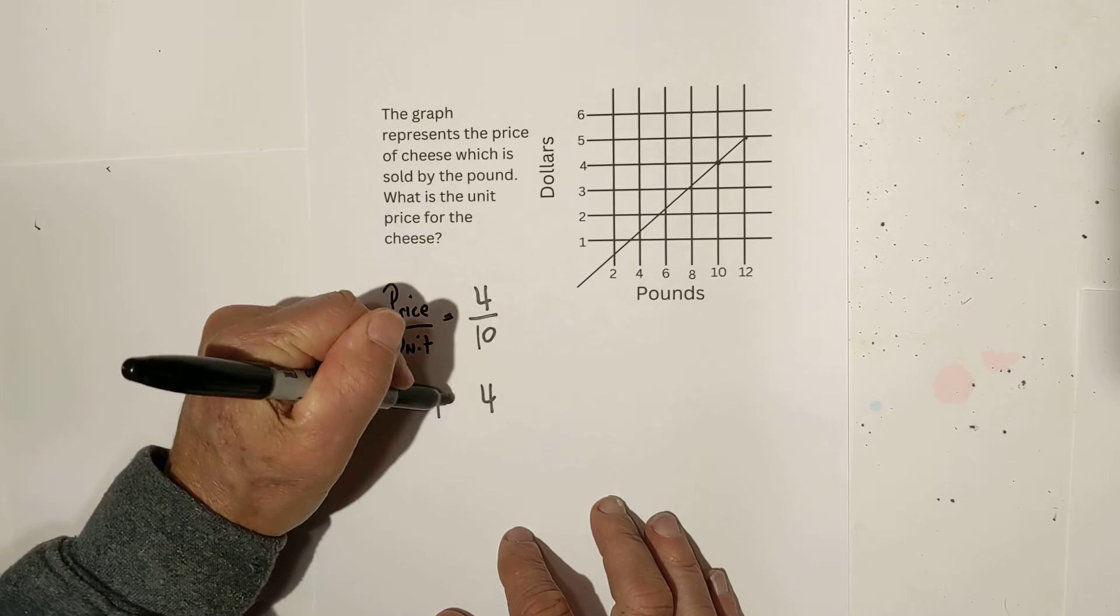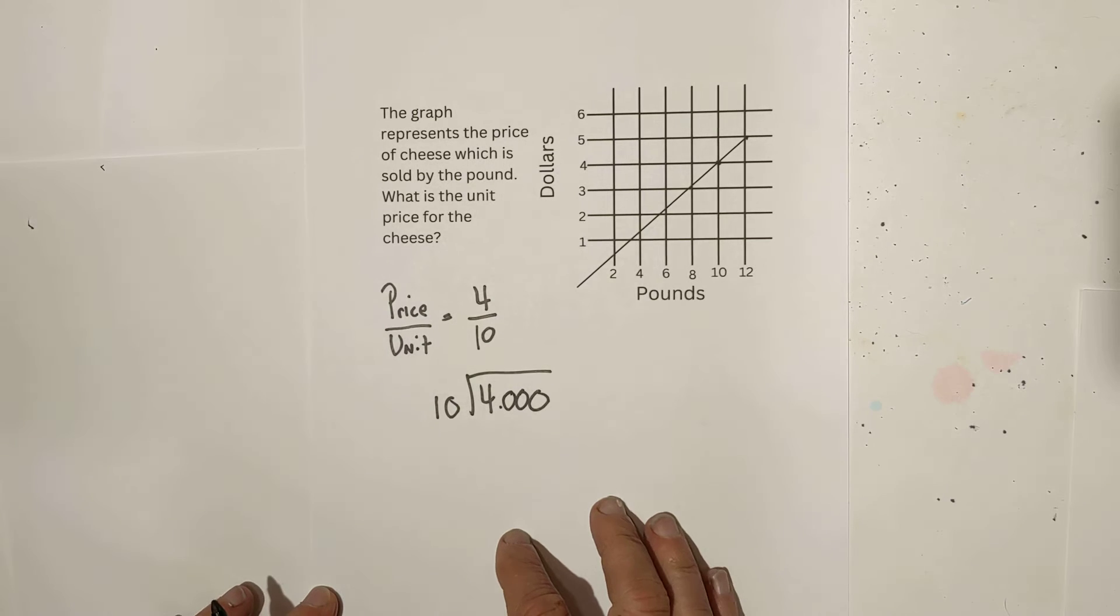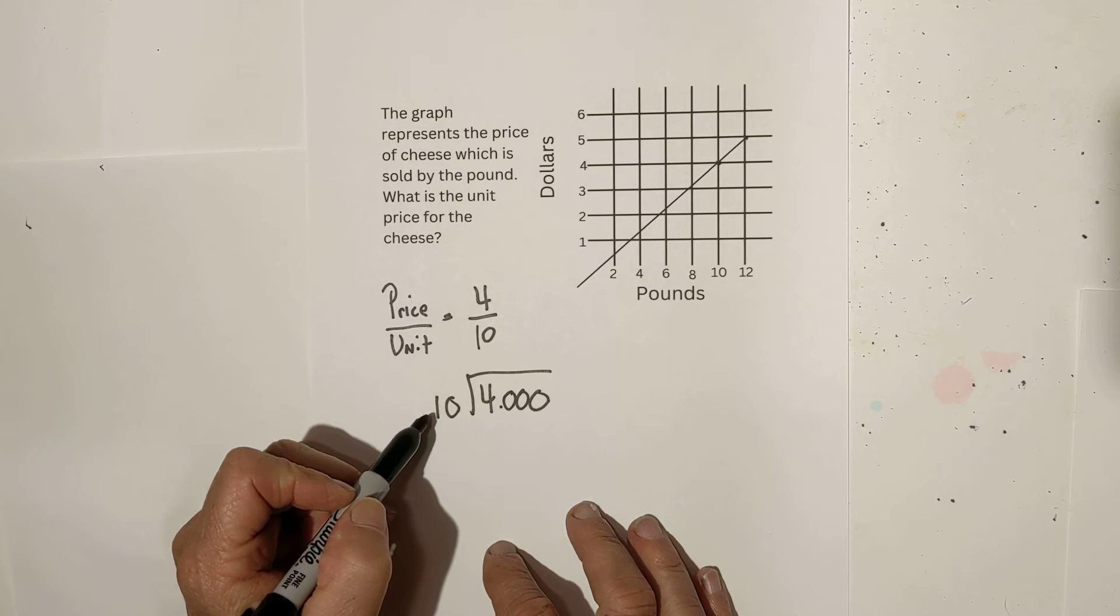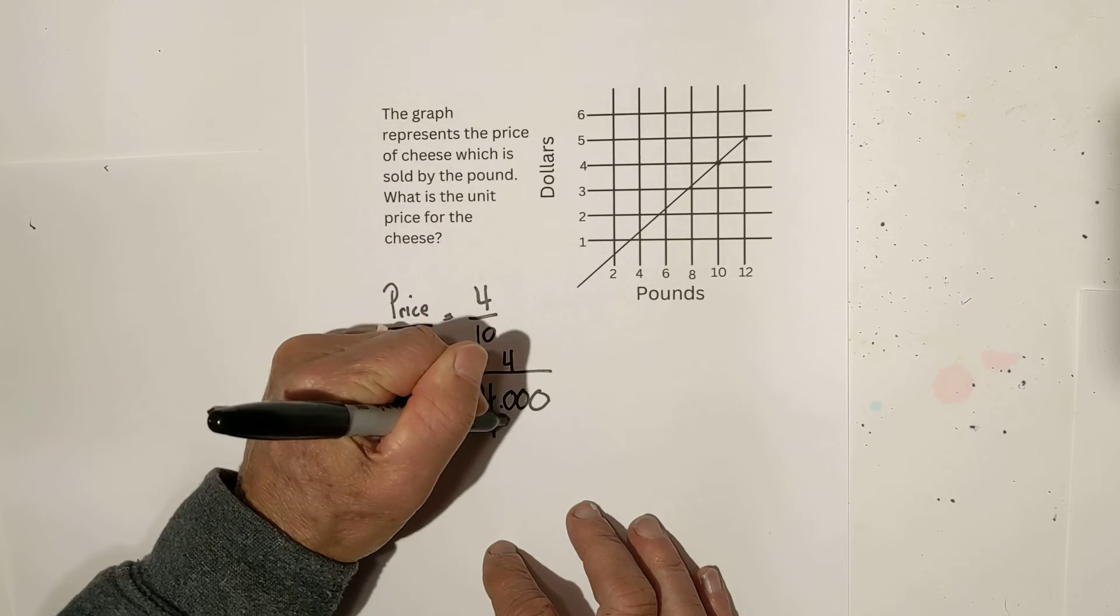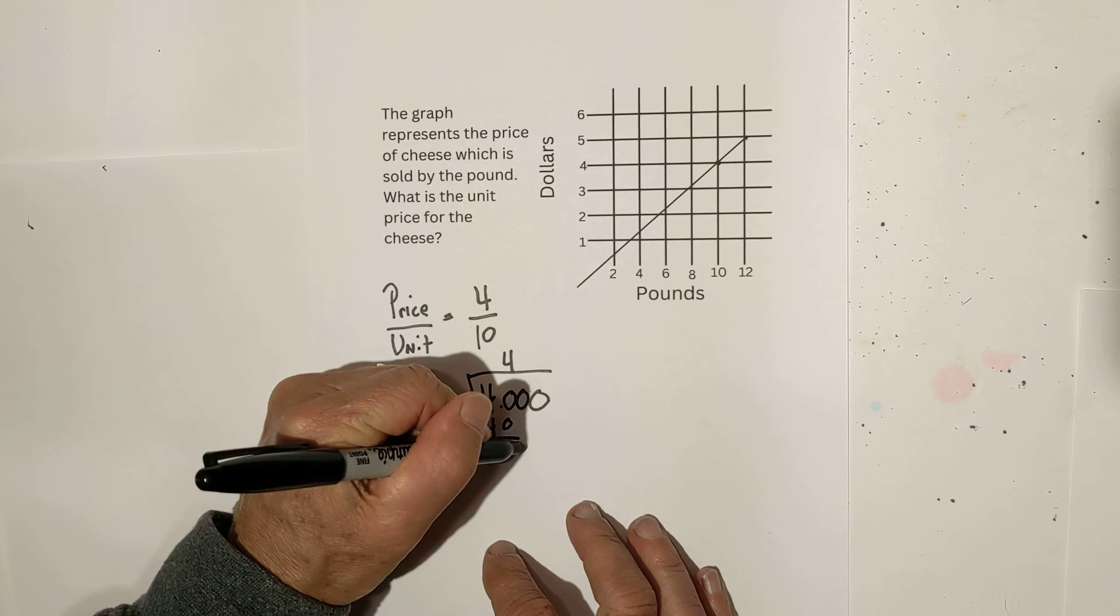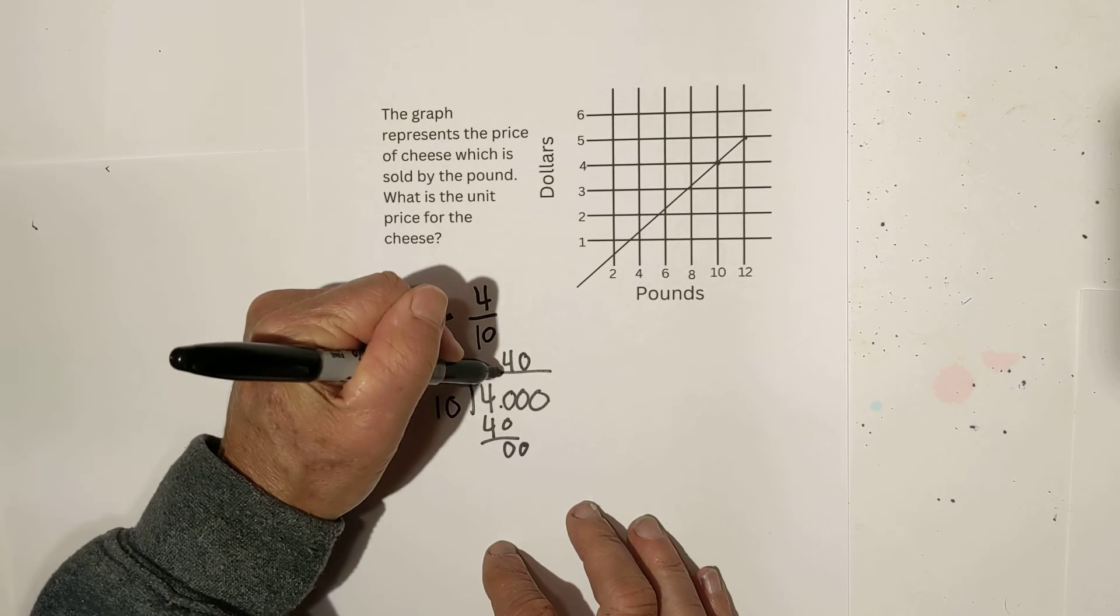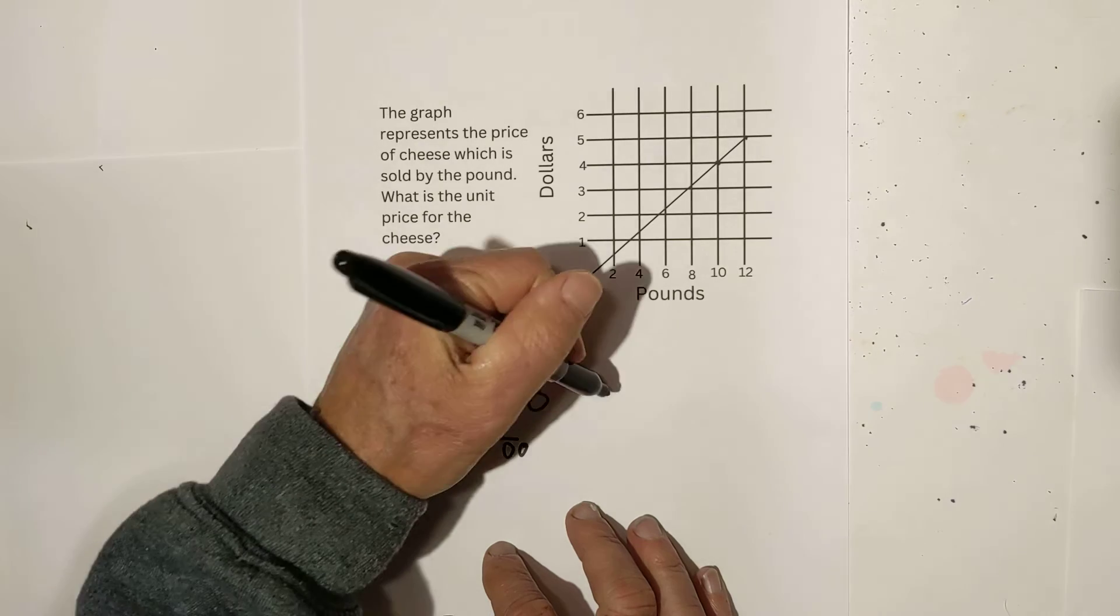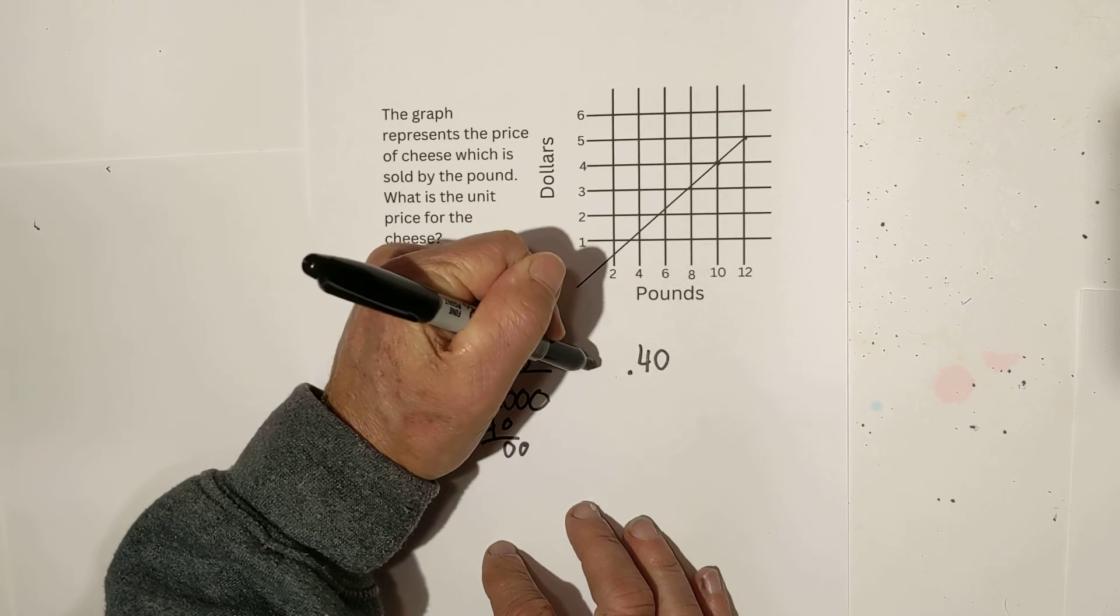So now all we do is divide four by 10. 10 will not go into four, but it will go into 40 four times. Four times 10 is 40. Bring down, there's no remainder, bring down the zero. And 10 goes into zero zero times. Remember, bring up the decimal. So it looks like the unit price is going to be 40 cents.